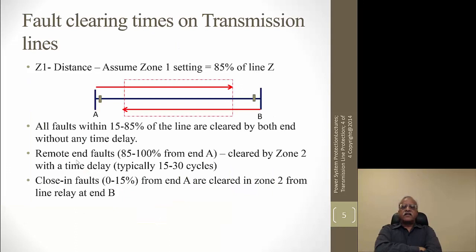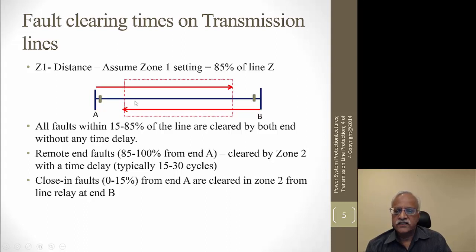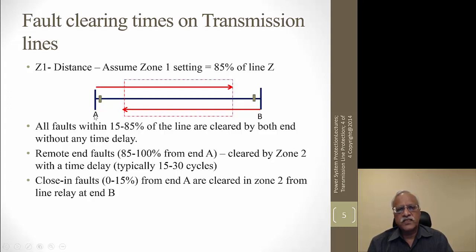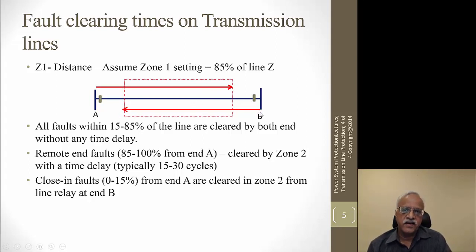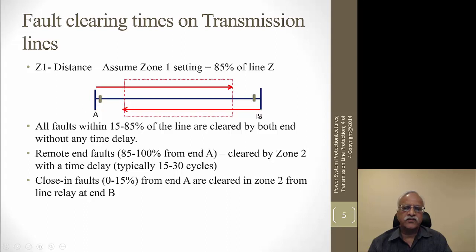Now looking at the transmission line: if there is a fault from 15% to 85% of the line section, assuming the zone 1 distance relay is set to 85% of the line, the relay at A looking towards B operates instantaneously if the fault is within 85% of the line section. Similarly, the relay at B looking towards A operates without any time delay if the fault is within 85% of the line section. So for faults from 15% to 85%, both relays see the fault and clear it instantaneously.